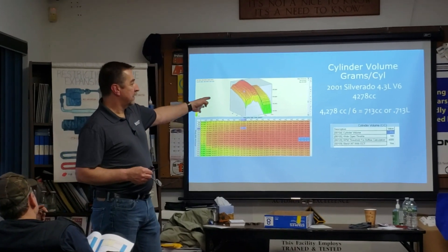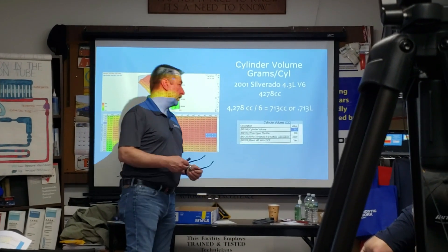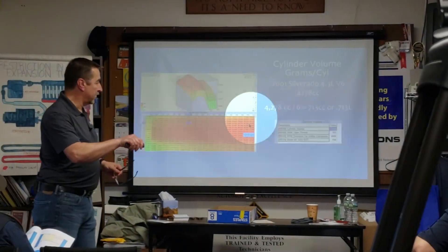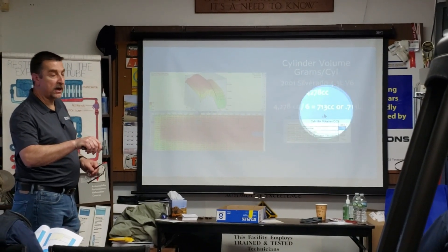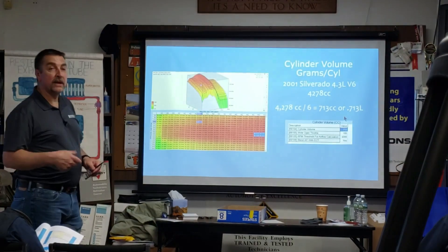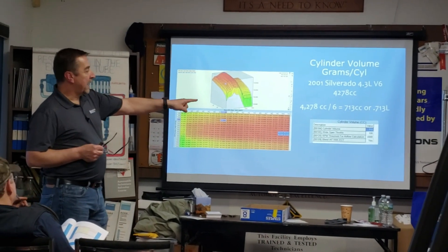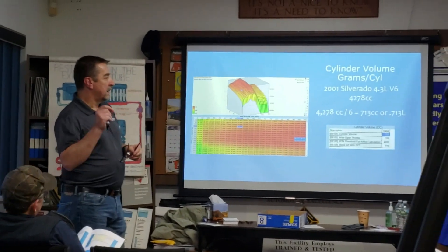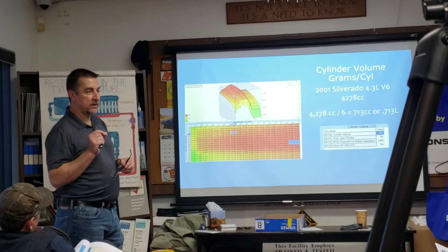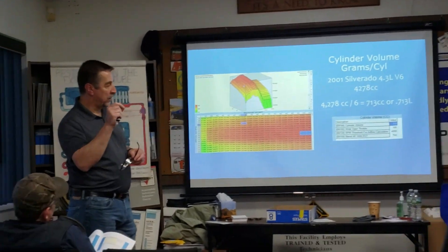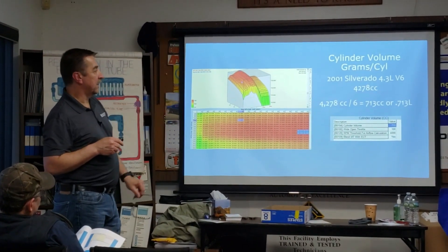Inside the controller, one of the items that has to be defined is cylinder volume. Whenever you're looking at or doing this equation we're going to talk about, we want to factor against liters — we're going to use metric. So when we look at that, that's the cylinder volume in cc, but you're going to want that number in liters, so it'll be a decimal. For this particular engine, that value will be 0.713.